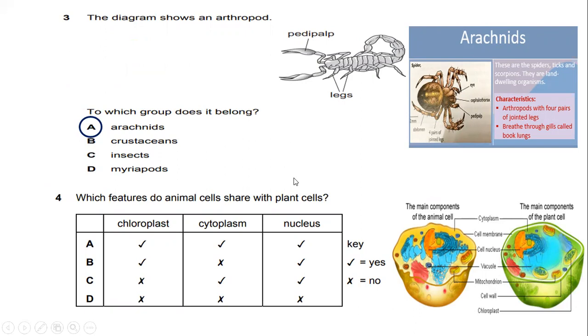Which features do animal cells share with plant cells? If you can see chloroplast is only contained in the plant cells, which is also the main component of the plant cells. So there does not exist in the animal cells. And also nucleus exists in the animal cells and the plant cells. So the answer for question number four is C.